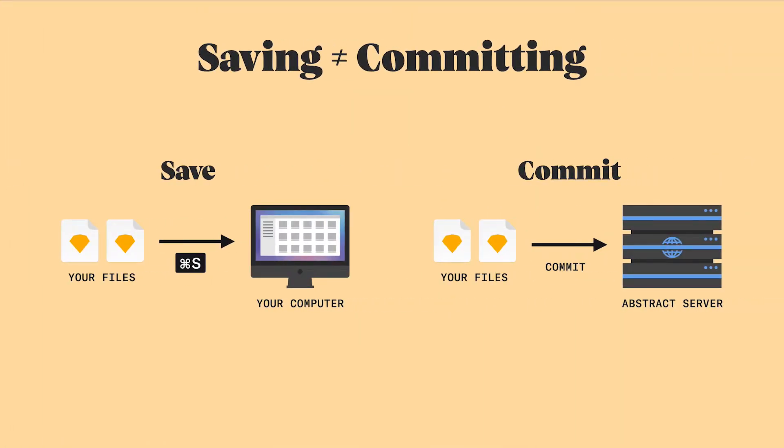Remember from a previous video that saving and committing are two different things. Saving a file stores the changes on your computer, while committing pushes those changes to Abstract. You can save your changes and then close the file or quit Abstract completely, and those changes will be there for you the next time you open the file from Abstract. However, your saved changes won't be backed up should something happen to your computer, and your team won't have access to the designs until you commit.